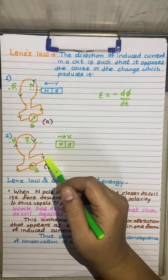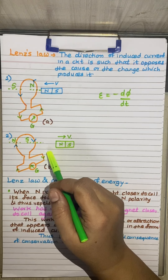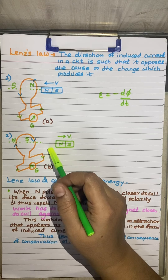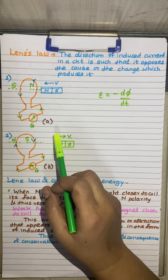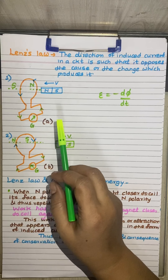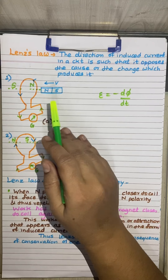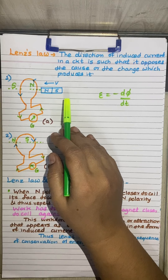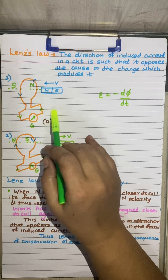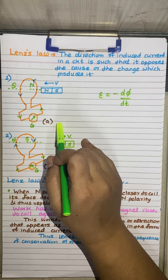Suppose Lenz law is not valid. Then the induced current flows through the coil in the direction opposite to one directed by Lenz law. The resulting force on the magnet makes it move faster and faster, and the magnet gains speed and hence kinetic energy without expending an equivalent amount of energy. This sets up perpetual motion of the machine, violating the law of conservation of energy.